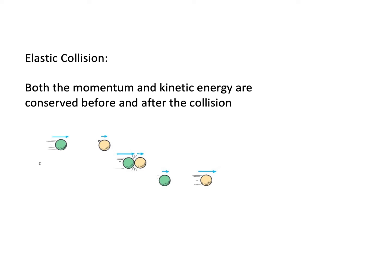Here's another possibility: the green ball and the yellow ball are going in the same direction, but the green ball is moving faster — the larger arrow shows it's going faster. It overtakes the yellow ball and collides, transferring some momentum. The green ball slows down and the yellow ball speeds up, but the momentum is conserved. If it's elastic, the energy is conserved as well. If it's inelastic, the momentum is still conserved but the energy won't be.